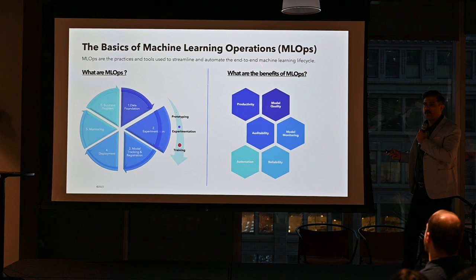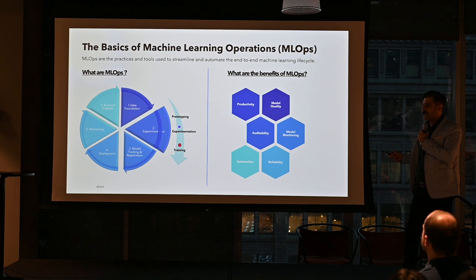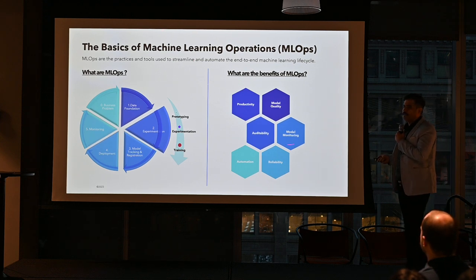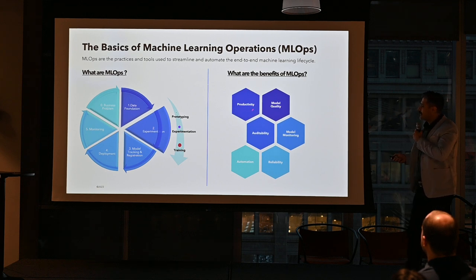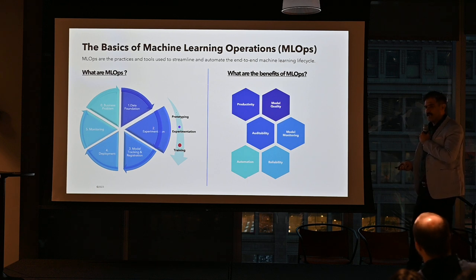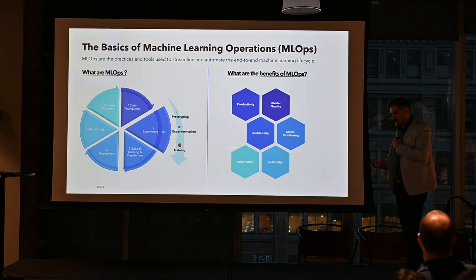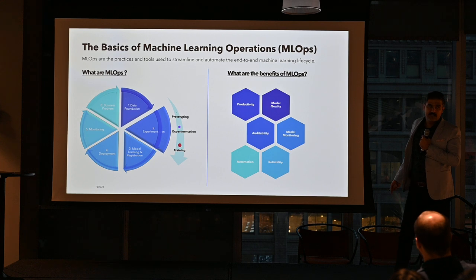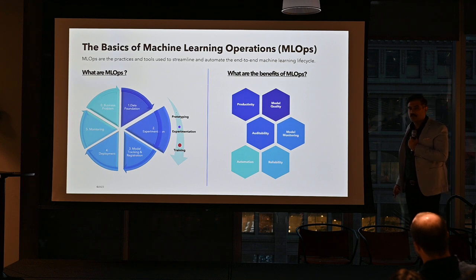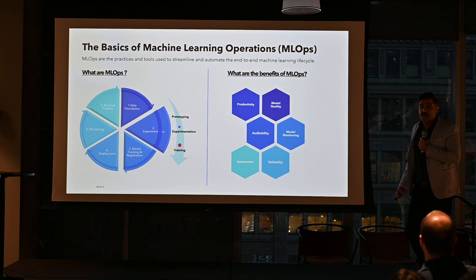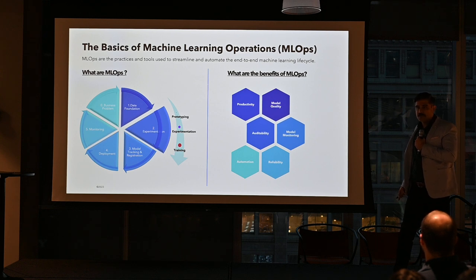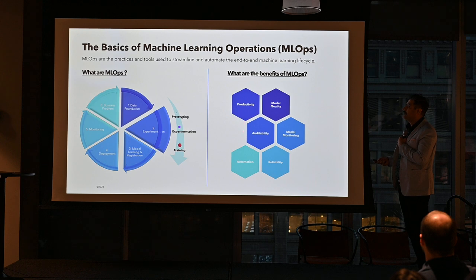The only two key components in DataOps are data and code. But in MLOps, there are data, code, and model that you want to promote between dev, test, and prod. DataOps means data operationalization; MLOps is machine learning operationalization. You industrialize your data, then industrialize your ML model. Why? Because of productivity. Up until 2021, about 80% of machine learning models developed at enterprise scale never went to production — whatever you do in a Jupyter notebook is just a prototype.